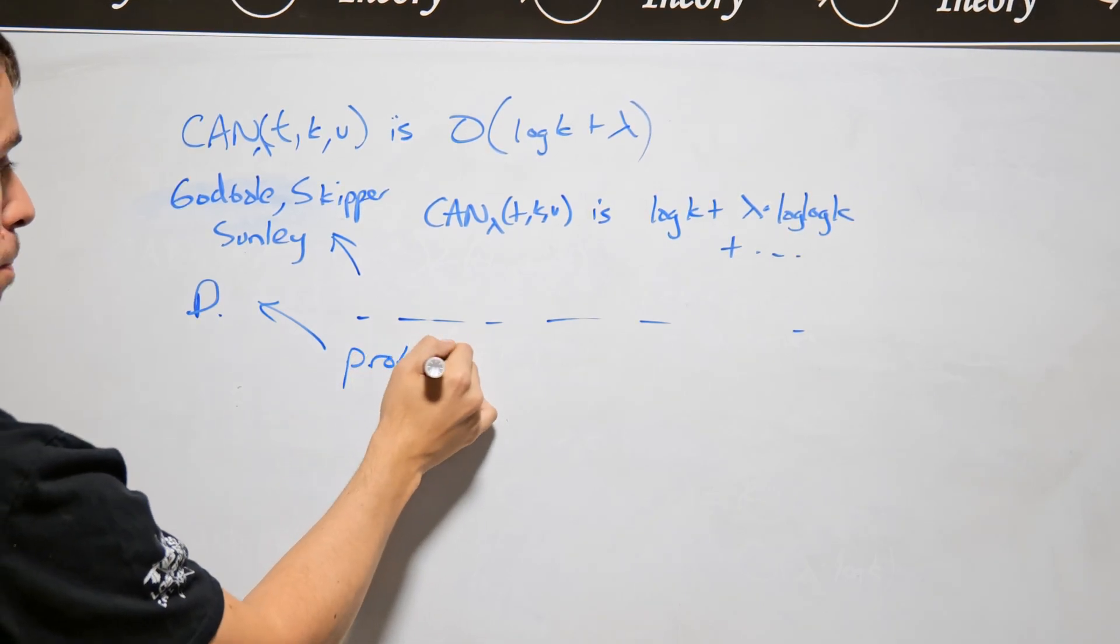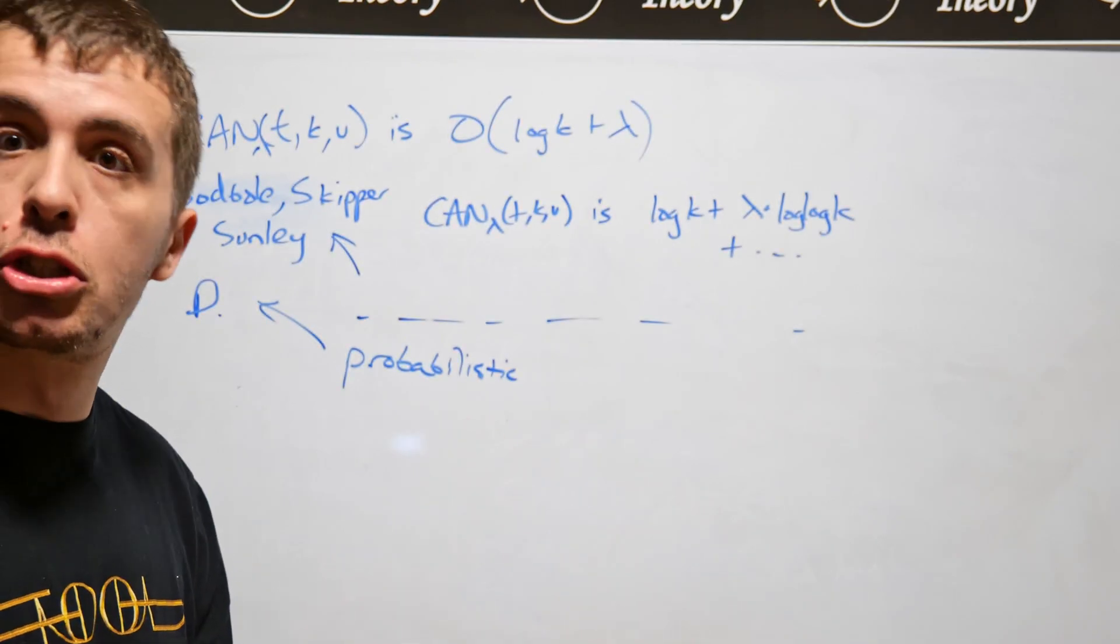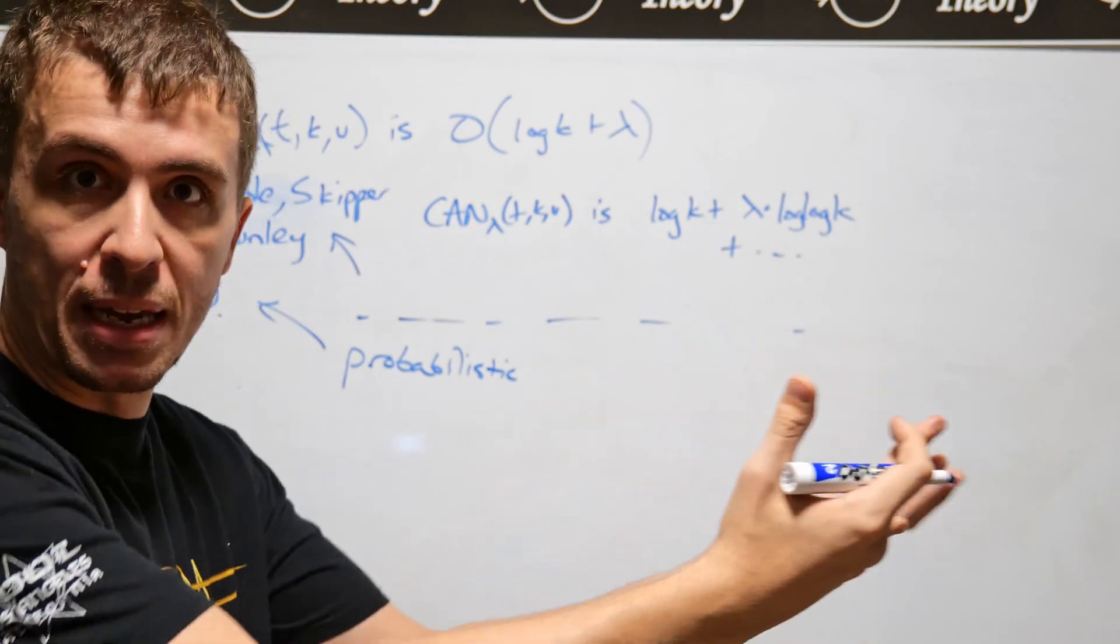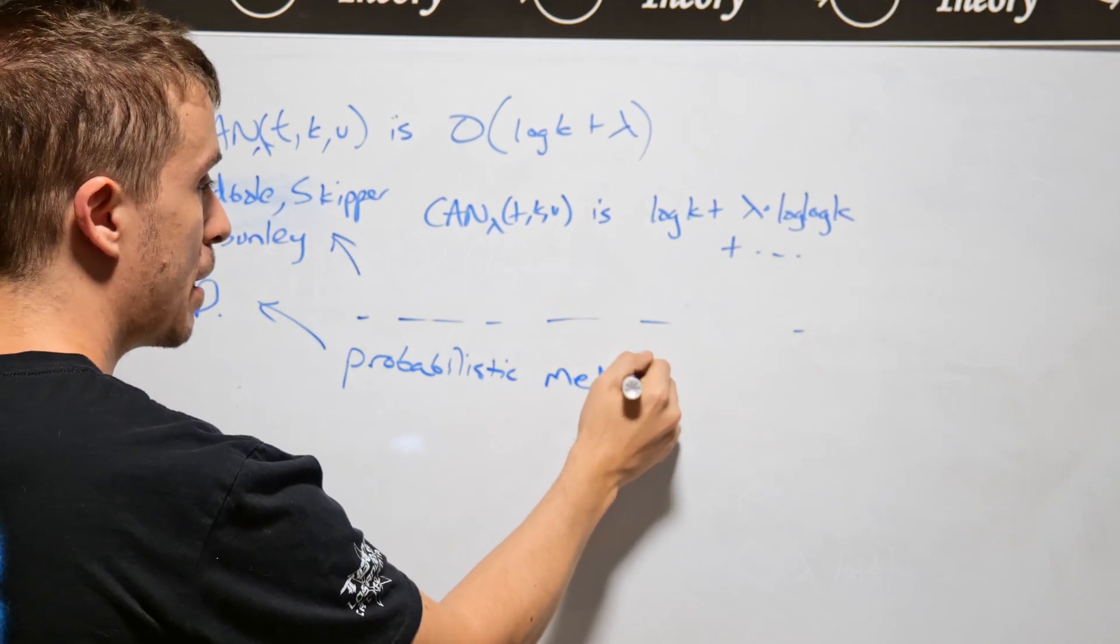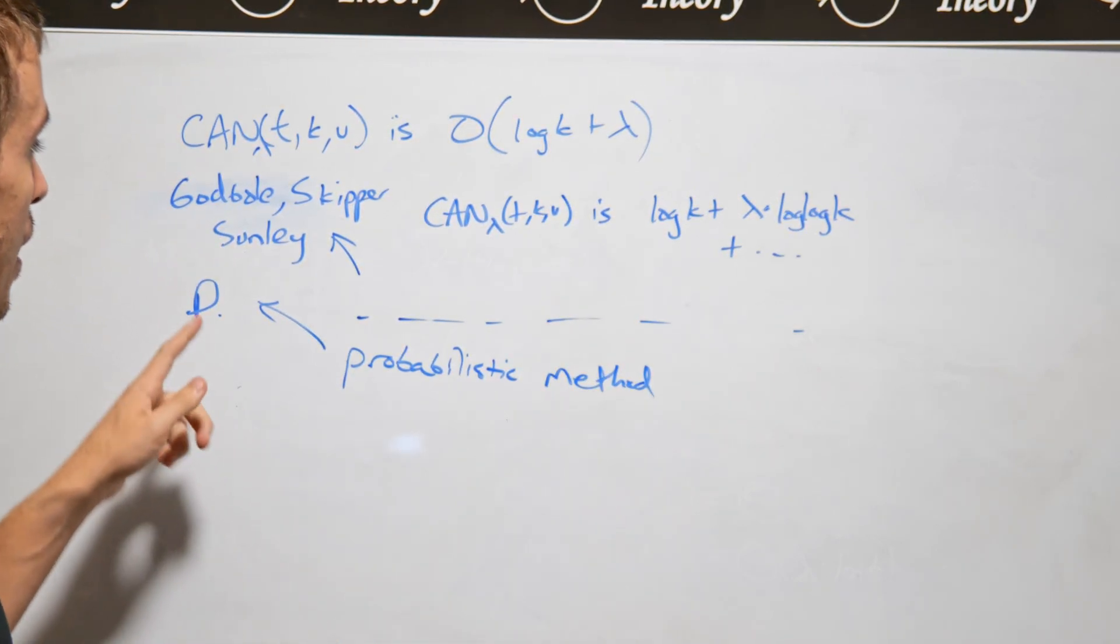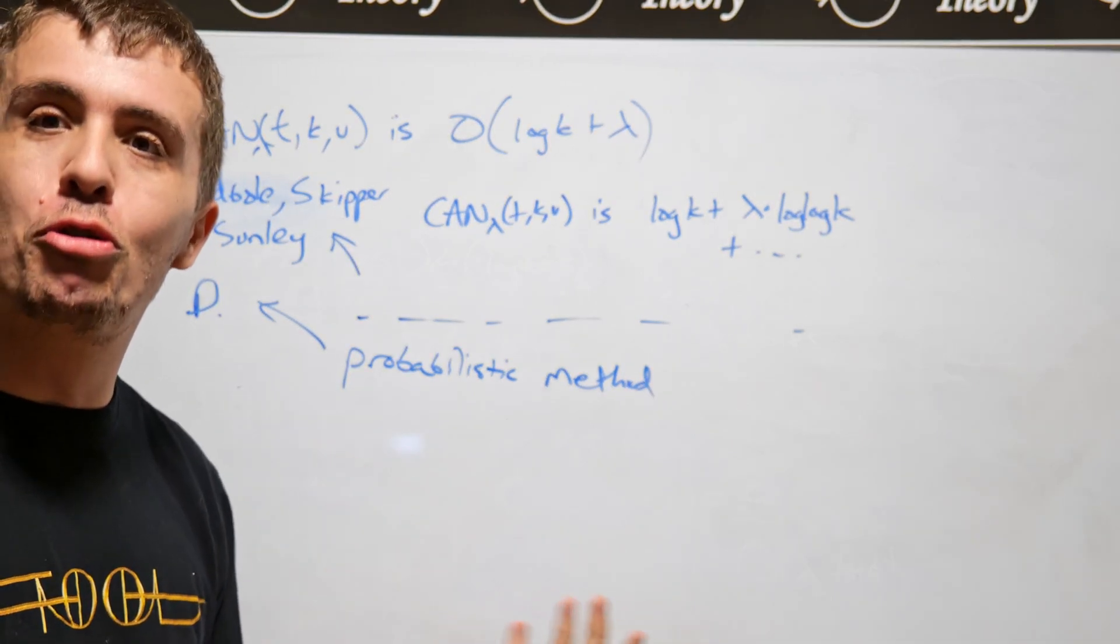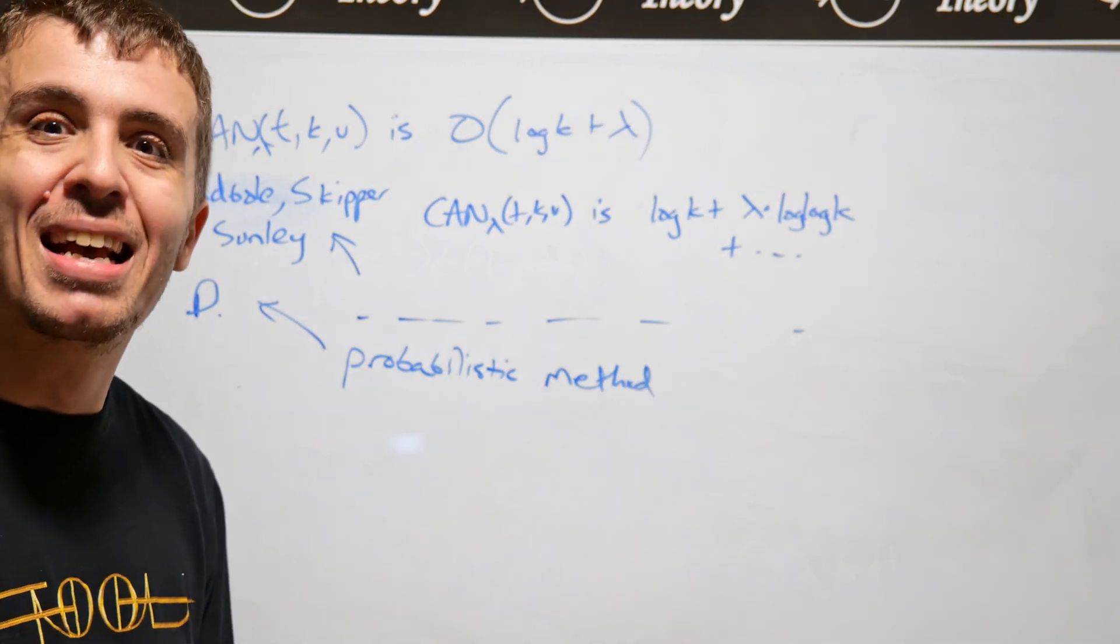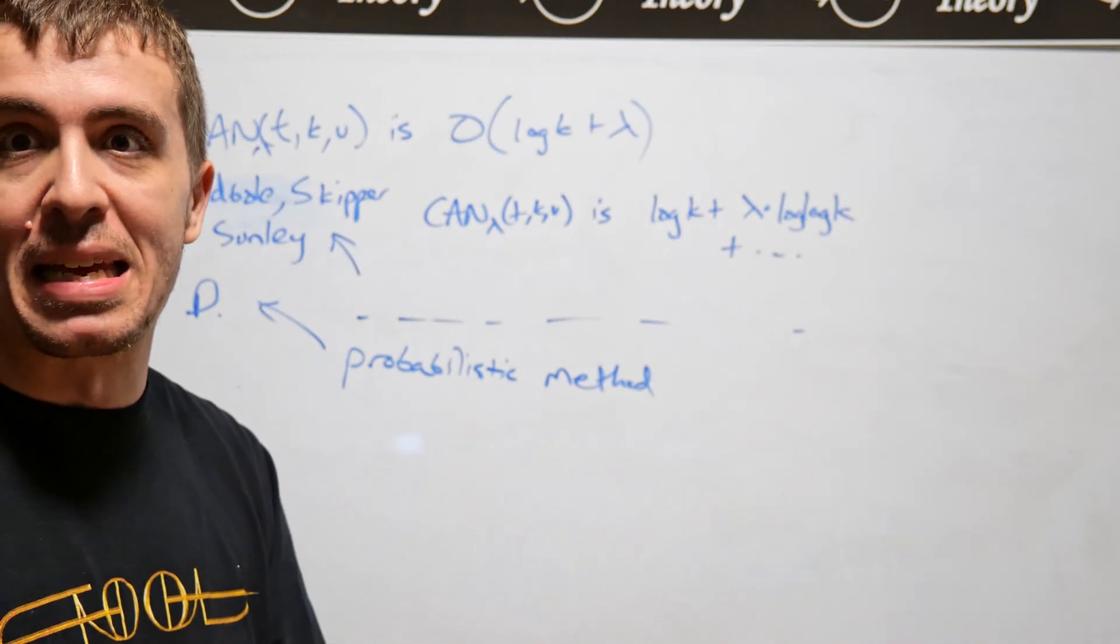use something called the probabilistic method. And this is the method that I used in the previous video to show that covering arrays are logarithmic in growth in terms of the number of columns. And so this probabilistic method is actually really good. The thing is, is that in my dissertation I used basically the most crude approximation possible, and it was not competitive at all because I didn't happen to know any advanced technique.